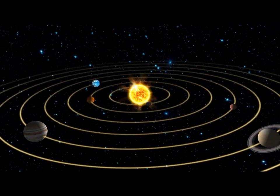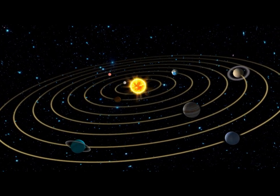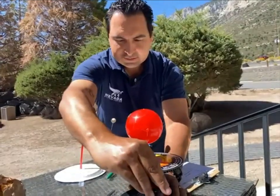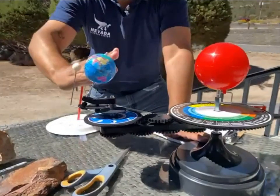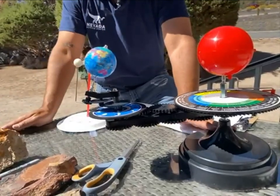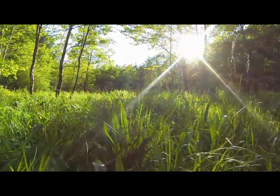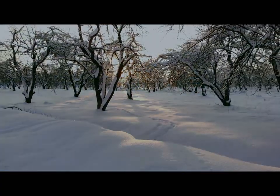What does the equinox also represent? It means a change of the seasons. When we get into summertime in the Northern Hemisphere, the tilt of our planet is towards the sun, so the Northern Hemisphere gets a lot more radiation, which heats up the atmosphere and gives us summer. During wintertime in the Southern Hemisphere, the planet is pointing away from the sun and getting less radiation, making it colder and thus wintertime.